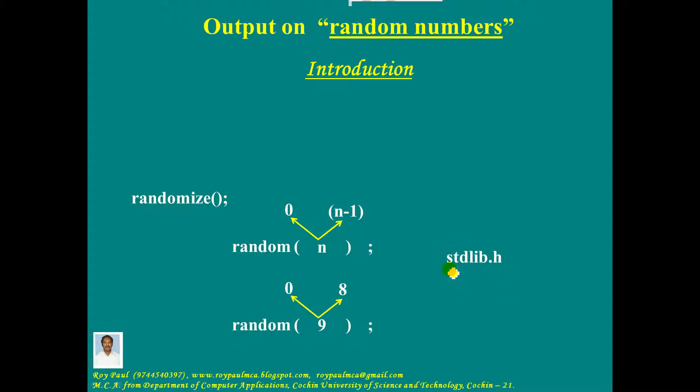These are the three points to be borne in mind when you answer an output type of question based on random numbers. The first point: random of n returns a number between 0 and n-1, both inclusive. Even 0 may come, even n-1 may come.